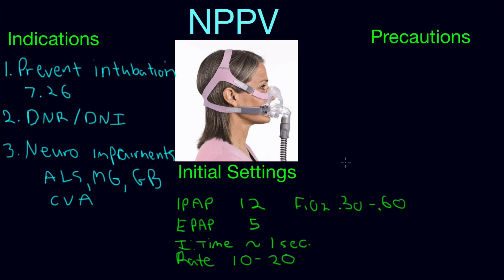You want to consider that if they have COPD, you want to use the lowest FIO2 possible that is at least acceptable for the patient. Also, if they need more than 60% FIO2, that may be a sign that they're in hypoxemic respiratory failure, and they may do better on invasive mechanical ventilation.